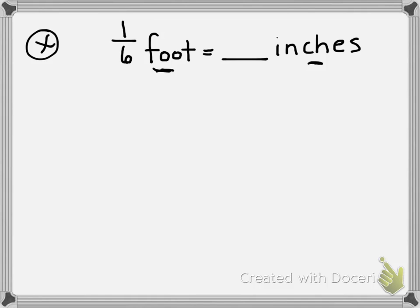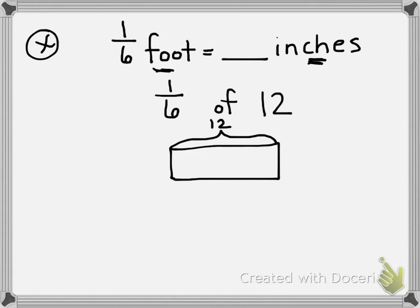The next question we need to ask ourselves is, how many inches are there in a foot? Well, we know that there are 12 inches in a foot. So we need to find 1 sixth of 12. Again, if I drew a tape diagram, I have my whole number of 12. And I have to partition my tape diagram into 6 equal units. My numerator, which is 1, tells me how many units I'm looking for. So let's work out the problem.